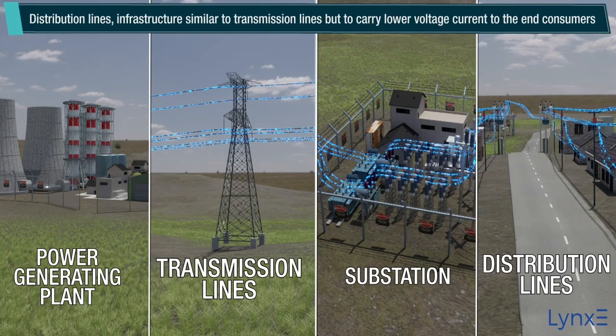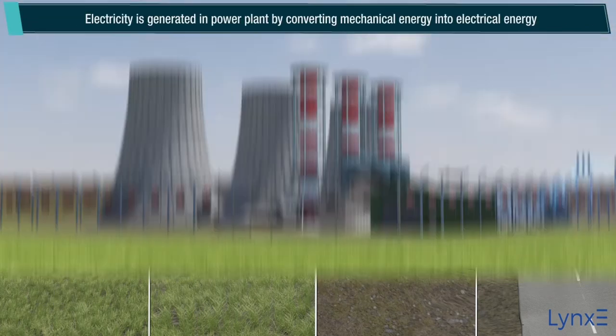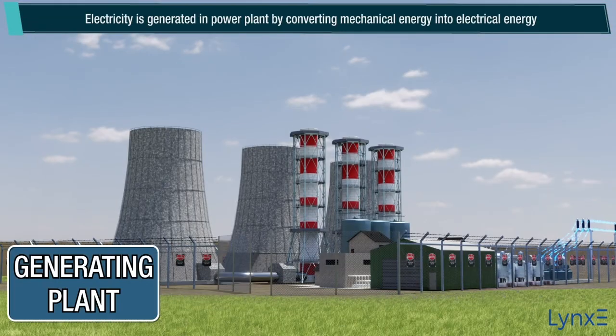Distribution lines — infrastructure similar to transmission lines but carrying lower voltage current to the end consumers. Electricity is generated in a power plant by converting mechanical energy into electrical energy.